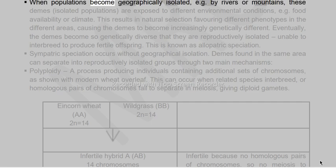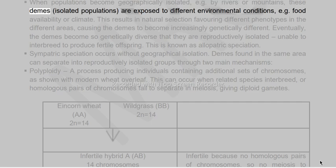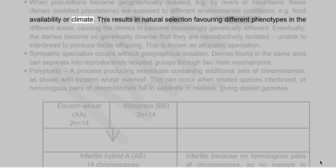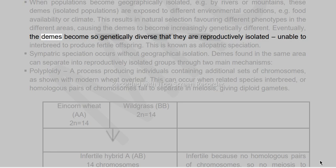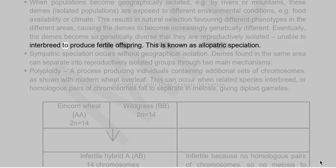When populations become geographically isolated, e.g. by rivers or mountains, these demes are exposed to different environmental conditions such as food availability or climate. This results in natural selection favouring different phenotypes in different areas, causing the demes to become increasingly genetically different. Eventually the demes become so genetically diverse that they are reproductively isolated, unable to interbreed to produce fertile offspring. This is known as allopatric speciation.